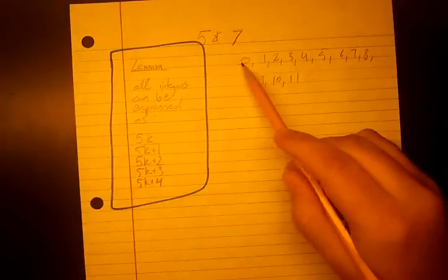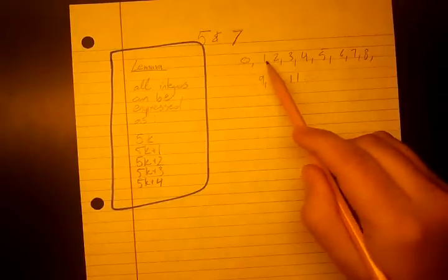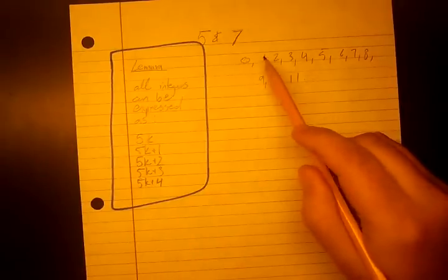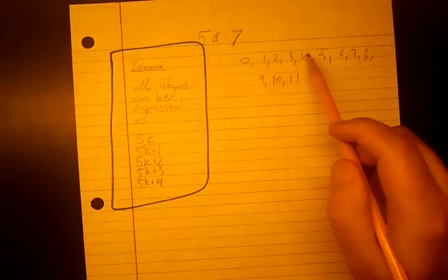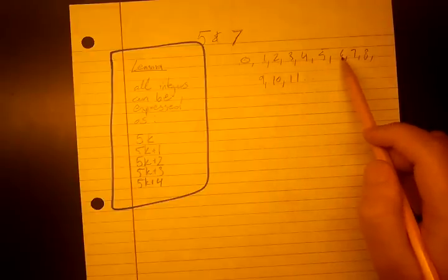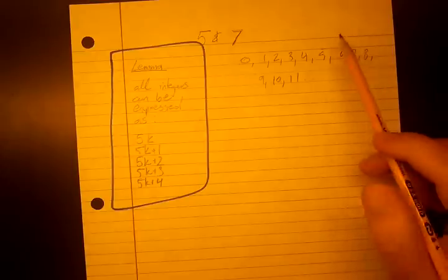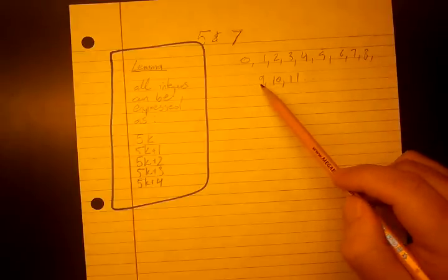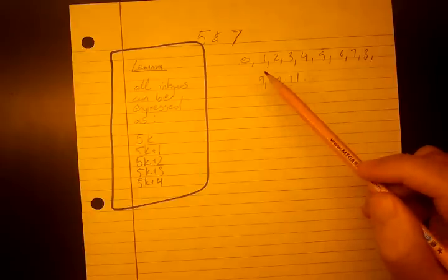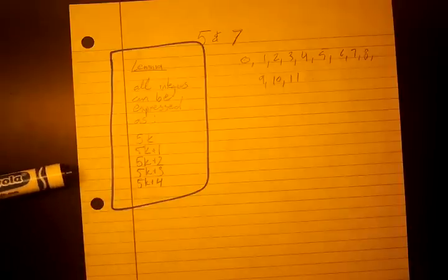So what is 0? 0 is a multiple of 5, it's 5 times 0. What is 1? 1 is a multiple of 5 plus 1, it's 5 times 0 plus 1. And you can see how that's true for all these. What is 6? 6 is also a multiple of 5 plus 1, it's 5 times 1 plus 1. What is 9? 9 is a multiple of 5 plus 4, it's 5 times 1 plus 4. So we see how this lemma is true.